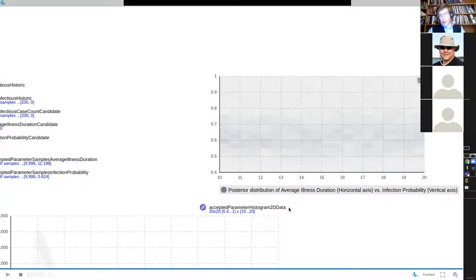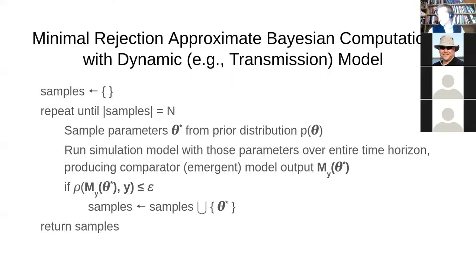Those are my comments about approximate Bayesian computation. I've given you two example models. Are there any questions? We have a bit of time and I'd be glad to field any questions, or anyone who wants to continue some of the more general discussion from this morning. Or if you want to build on what you've seen this afternoon with hidden Markov models or other components, I'm glad to discuss that as well.